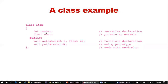The class has two data members: 'number', which carries integer values, and 'cost', which is a float for decimal numbers. Since no access specifier is written, both belong to the private section by default. Generally, member functions of a class are declared as public, whereas data members are kept private. Private data members are accessed through public member functions.